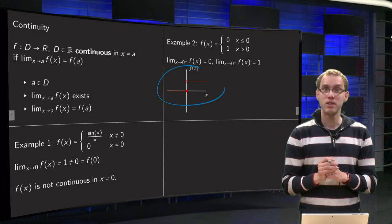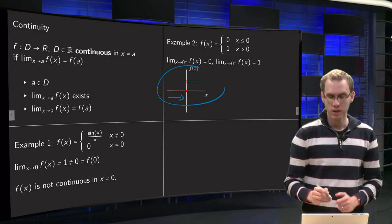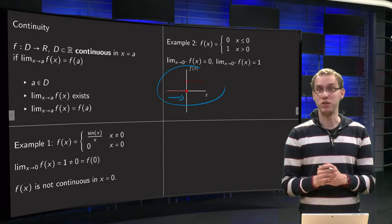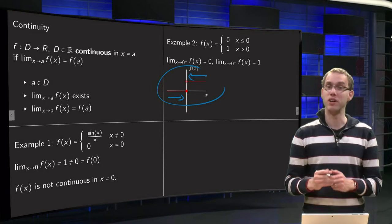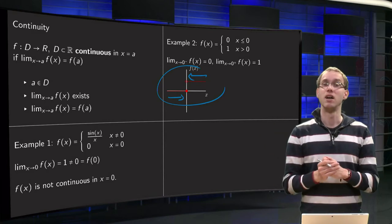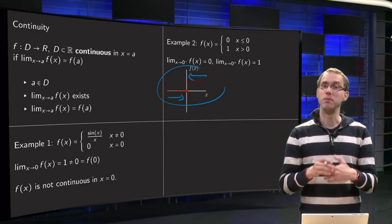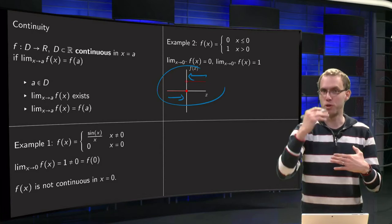So what about our limit? If we approach zero from the left, then the limit equals zero. And if we approach zero from the right, our limit will be one. So limits from left and right are not the same, so that means our function is not continuous at zero. Well you can see it of course, because you have a jump.